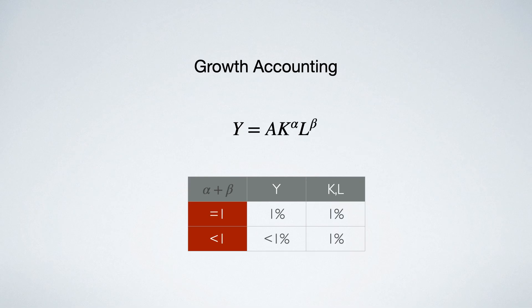If alpha plus beta is less than 1, a 1% increase of k and l will result in less than 1% increase of y. Net growth is negative. Hence, growth accounting is even dismal.